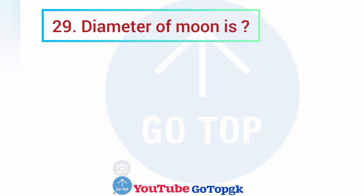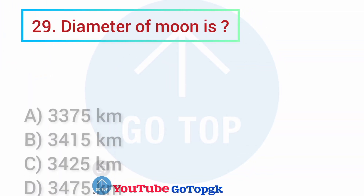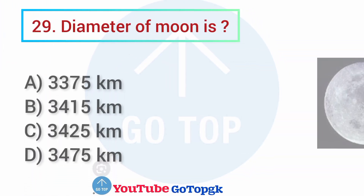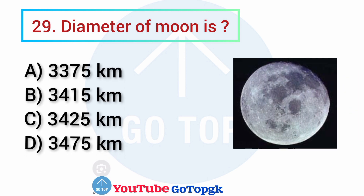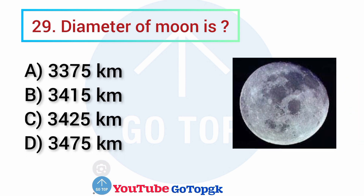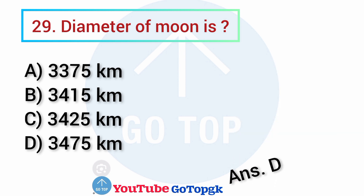Question No. 29. The diameter of the moon is: Options: A. 3375 km, B. 3415 km, C. 3425 km, D. 3475 km. Your correct answer is option D: 3475 km.